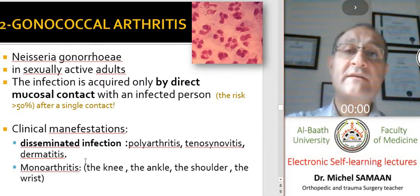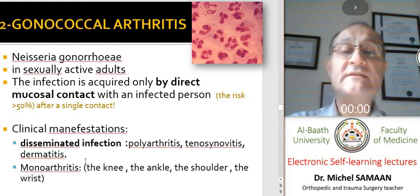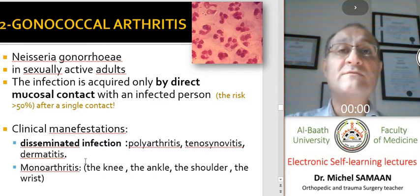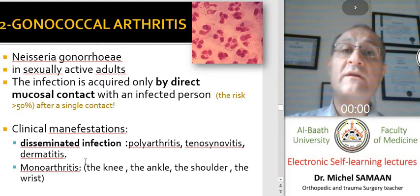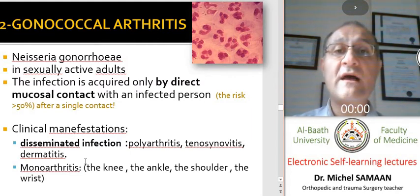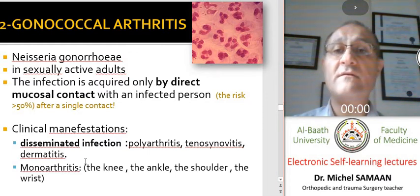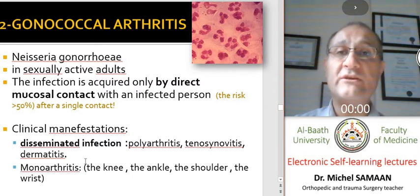In gonococcal arthritis, this is a sexually transmitted disease caused by Neisseria gonorrhoeae. Usually the infection is transmitted after the first or a single contact, with more than a 50% chance of contamination.